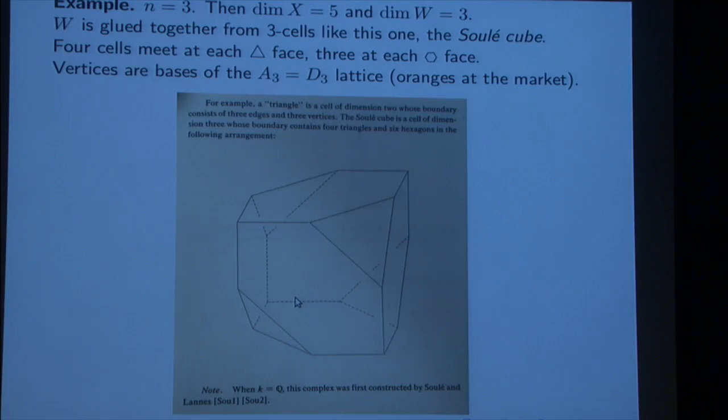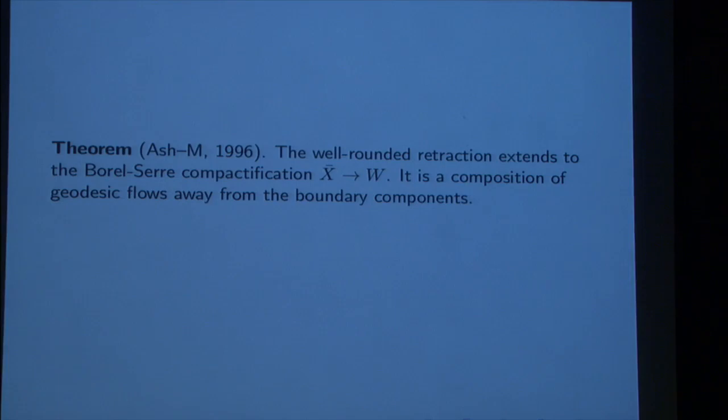For N equals three, the complex is made of something called the Soule cube. This is a solid three-dimensional cube. You chop off every opposite corner to make a triangular chopped off face. Christophe Soule's thesis was entitled On the Cohomology of SL(3,Z). He worked it out. Ash was inspired by Soule's retract to define the well-rounded retract. For SL3, you take this cube, you take this block, you glue a tree-like structure together. Three of these Soule cubes meet at every hexagonal face. Four of the Soule cubes meet at every triangular face.